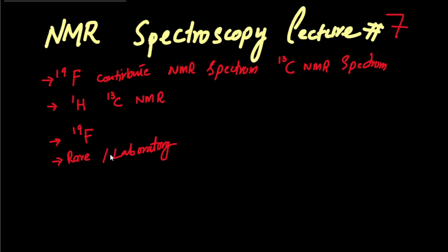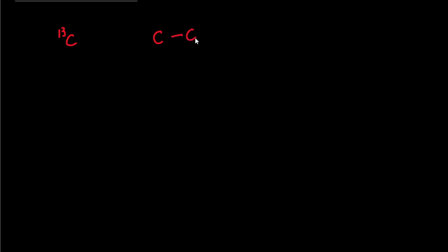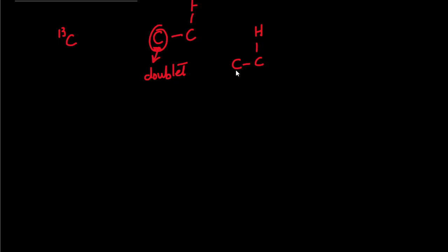If the fluorine-19 is within a few bonds from the carbon-13, it will give us a doublet. For example, there are two carbons and on one carbon there is a fluorine. If I check the multiplicity of this carbon in the carbon-13 NMR spectrum, it will give us a doublet. But if there is a proton on this carbon, it will not affect the multiplicity — it will just be a singlet.